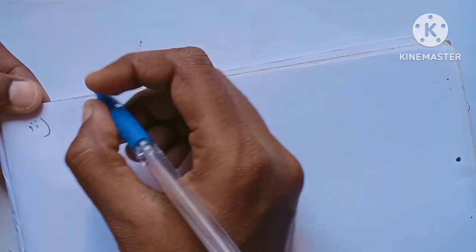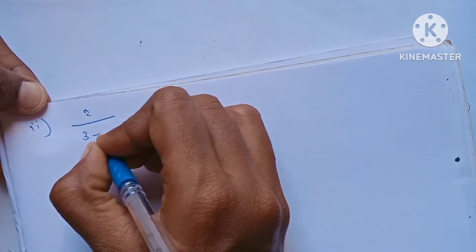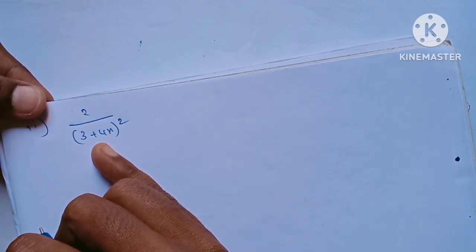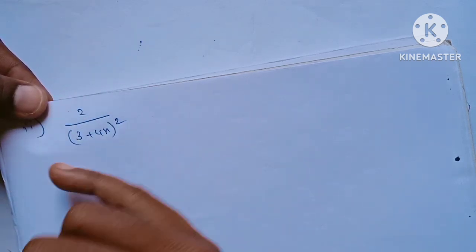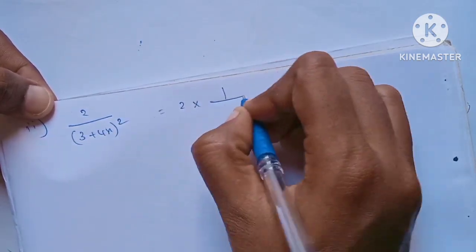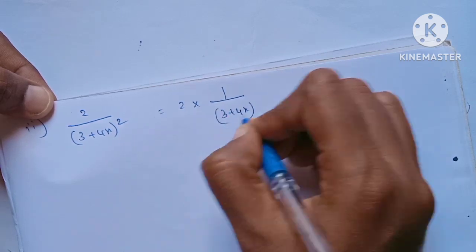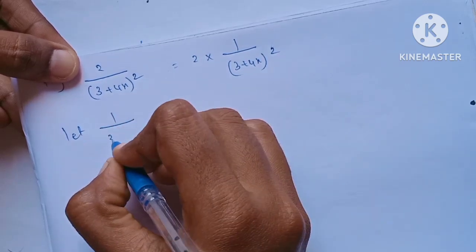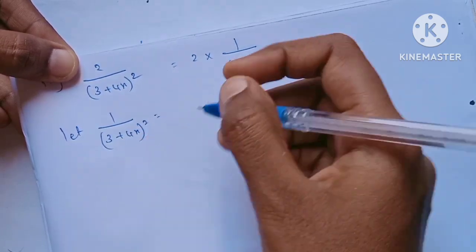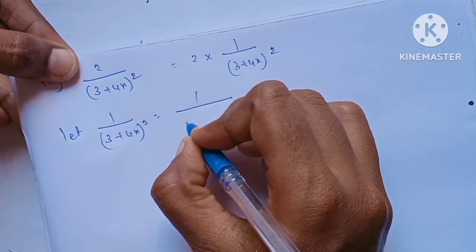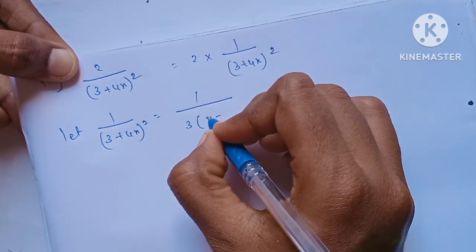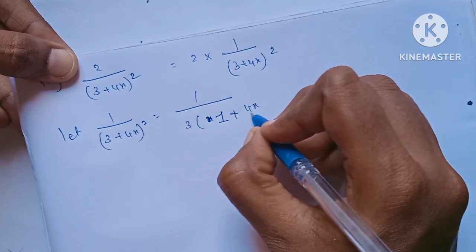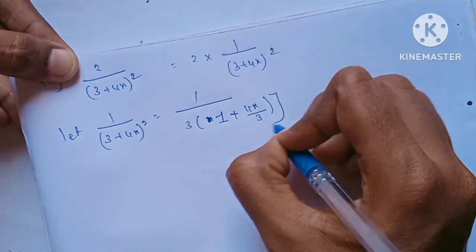The second question is (2/(3+4x)) squared. We rewrite this as (1/(3+4x)) squared. Factoring out 3, we get (1/3)(1 + 4x/3) whole squared, giving (1/9)(1 + 4x/3) to the power of minus 2.